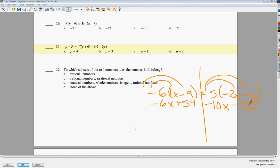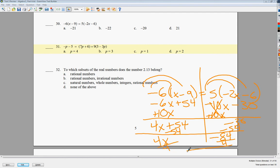So I need to get my x's together. I'm going to get rid of minus 10x by adding 10x. Those cancel. Now in this case, in order to get rid of plus 54, I need to subtract 54. So I end up with 4x is equal to negative 84, divide by 4 on both sides, and I get x is equal to negative 21. So my answer to number 30 is A.